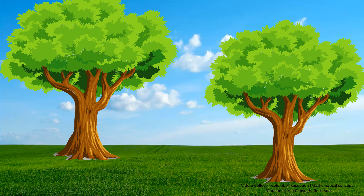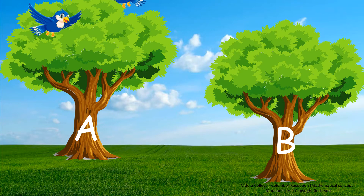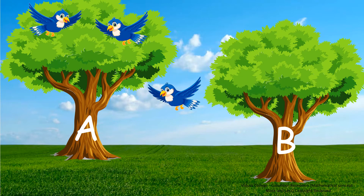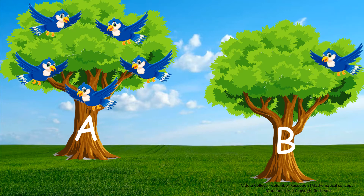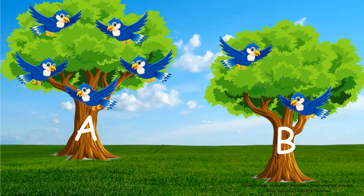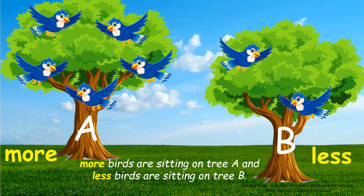Let's see some examples for More and Less. This is tree A and this is tree B. Let's see how many birds are coming to tree A: 1, 2, 3, 4, 5. Now let's see how many birds are coming to tree B: 1, 2. Can you see? There are more birds sitting on tree A and less birds sitting on tree B.